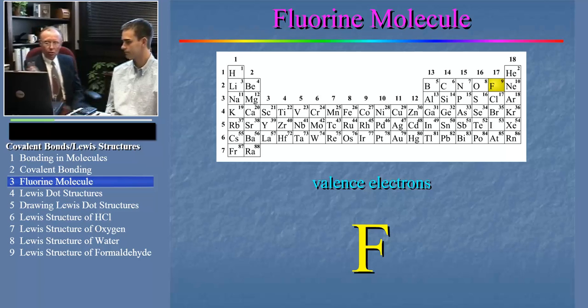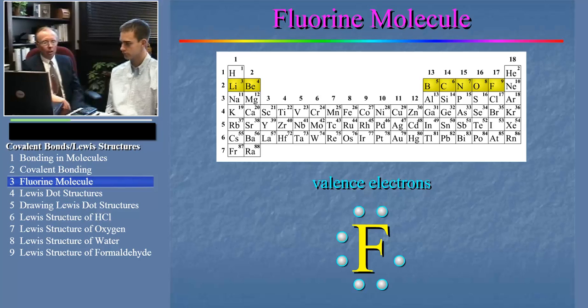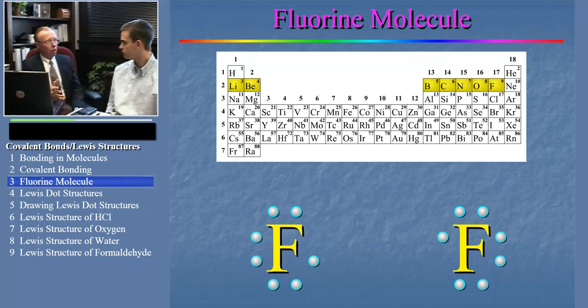We count from the left, just like this. So now we can show those seven valence electrons around the fluorine atom. Let's say another fluorine atom comes along. It also has seven valence electrons.